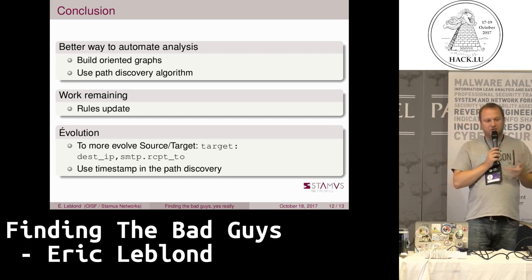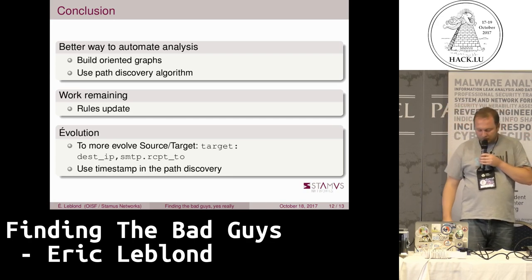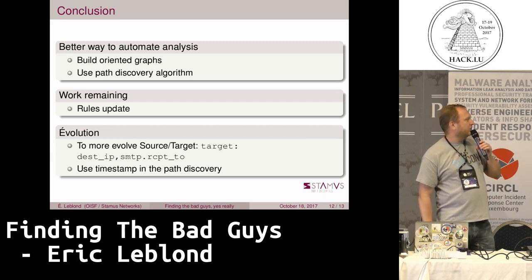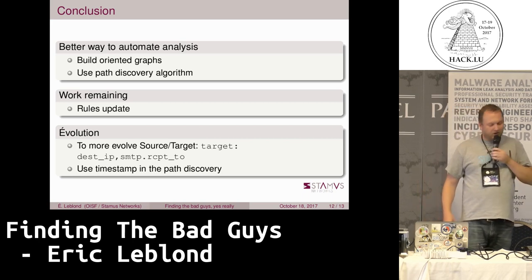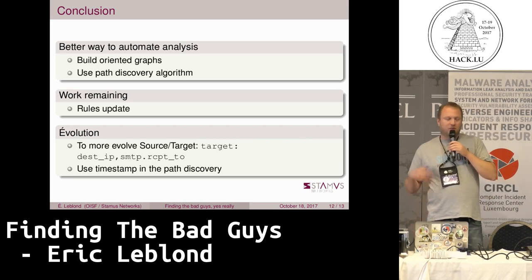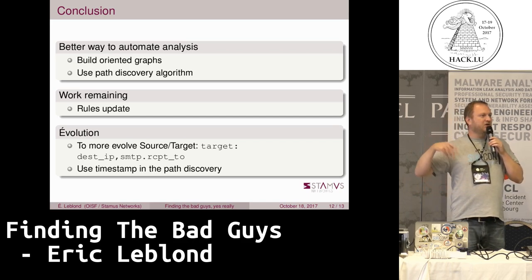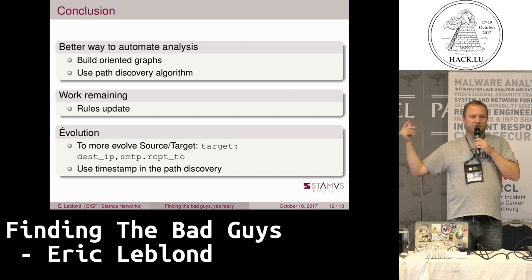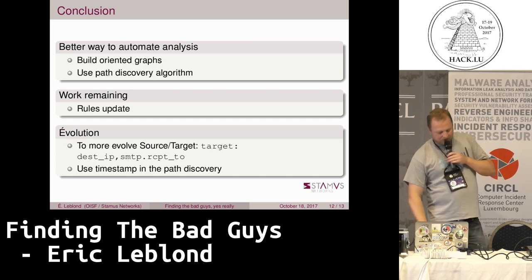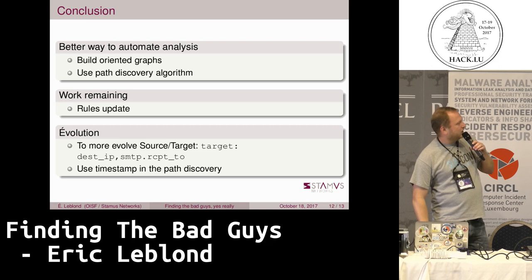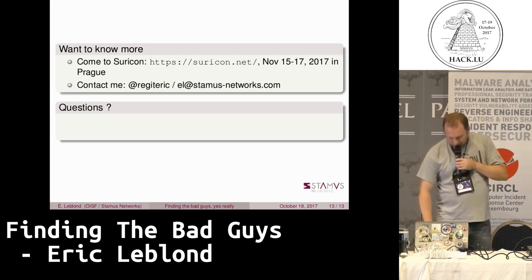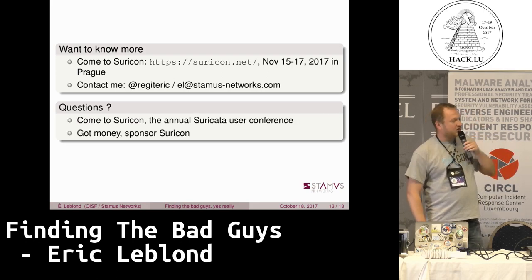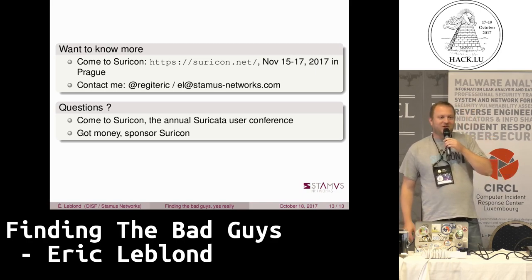One of the big problems with this approach is that we need to update the rules. I'm currently working with Emerging Threats, which is one of the bigger rule providers, to do that with something we can convert — and we have just switched to the Suricata 4.0 rule set, so that should be possible. Future evolution includes support for more advanced keywords: for example, when you have an alert on SMTP, you don't really care about the destination SMTP server — what matters is the email address that needs to be reached. We will be able to evolve to that soon. If you want to know more, you can come to Suricon, which is in Prague next month. If you have questions or money to sponsor it, come to Suricon.